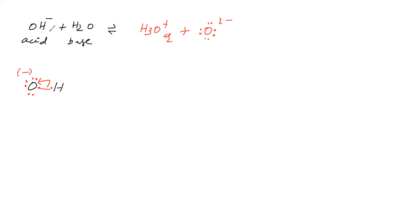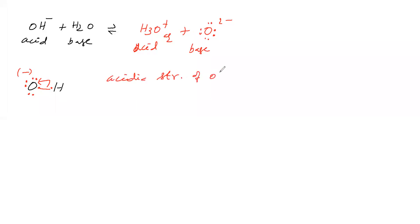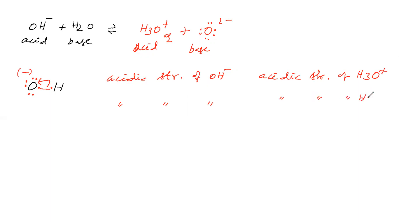As per the backward reaction, H3O⁺ donates H⁺ and becomes water — therefore it is an acid. Oxide takes H⁺ and becomes OH⁻ in the backward reaction — therefore it is a base. Now we will see the acidic strength of OH⁻ versus the acidic strength of H3O⁺, and compare acidic strength of OH⁻ versus water.